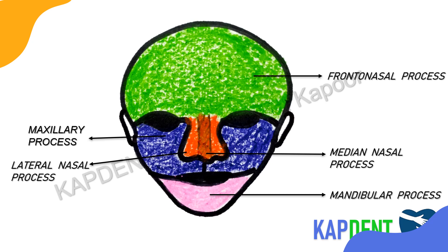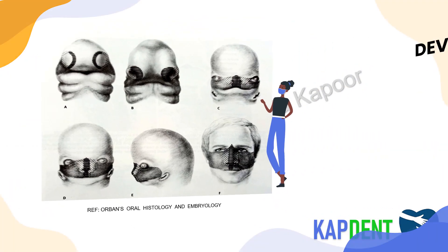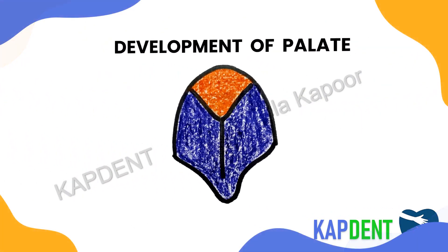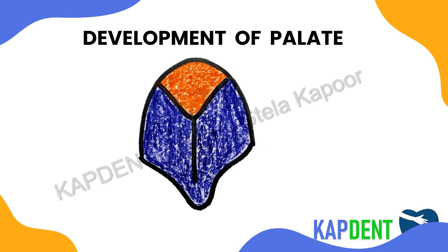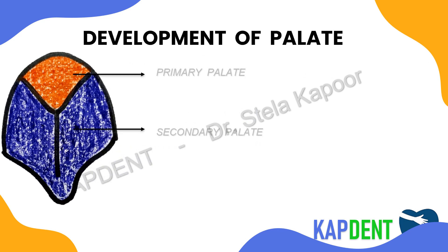Here is a diagram from Orban's book of Oral Histology and Embryology. This completes the first part of this lecture. Now let's start with the development of the palate. The palate develops in two portions: first, the primary palate develops from the fusion of the median nasal process, while the secondary palate develops from the two maxillary palatine processes.